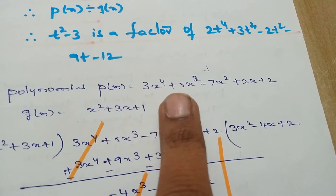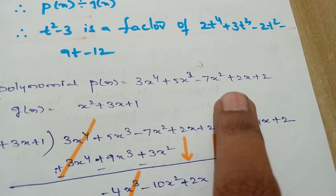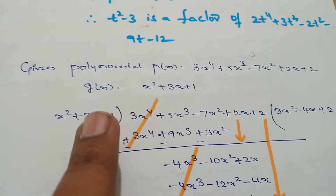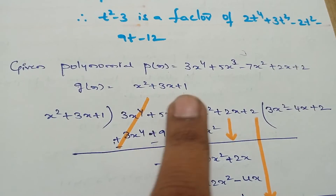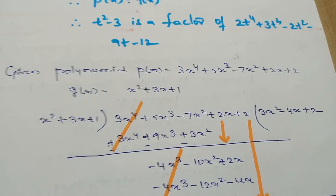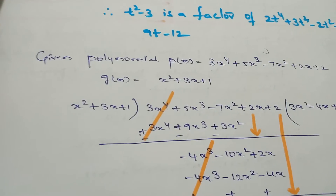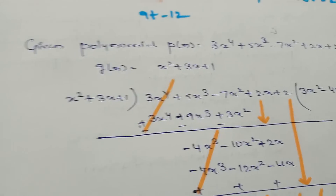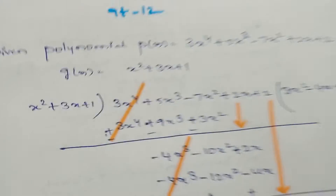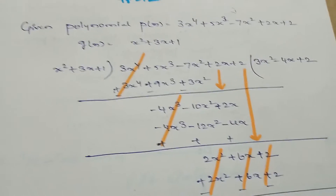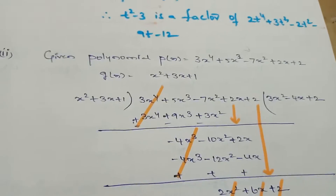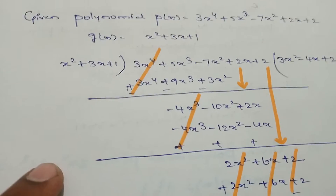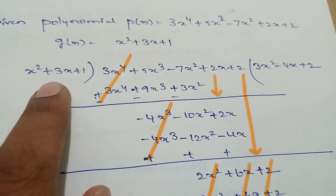Coming to the second sum: p(x) = 3x⁴ + 5x³ - 7x² + 2x + 2, and g(x) = x² + 3x + 1. Here both are in standard form. We can identify whether a polynomial is in standard form by checking that the powers are in decreasing order. Both p(x) and g(x) are in standard form, so we can solve the sum.